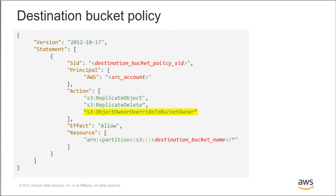Here's the bucket policy that you would attach to your destination bucket. The owner of the destination bucket must grant the owner of the source bucket permissions to change replica ownership. In a bucket policy, the principal element specifies the user, account, service, or another entity that is allowed or denied access to a resource. Reading through this policy, you can see the principal here is the source account, because we want to allow the source account — the default owner of the objects — to change the ownership. The effect is allow, and the resource we want to act on is the destination bucket, specified towards the end of the policy. The permission that allows the source bucket owner to change ownership is the S3 object owner override to bucket owner action.